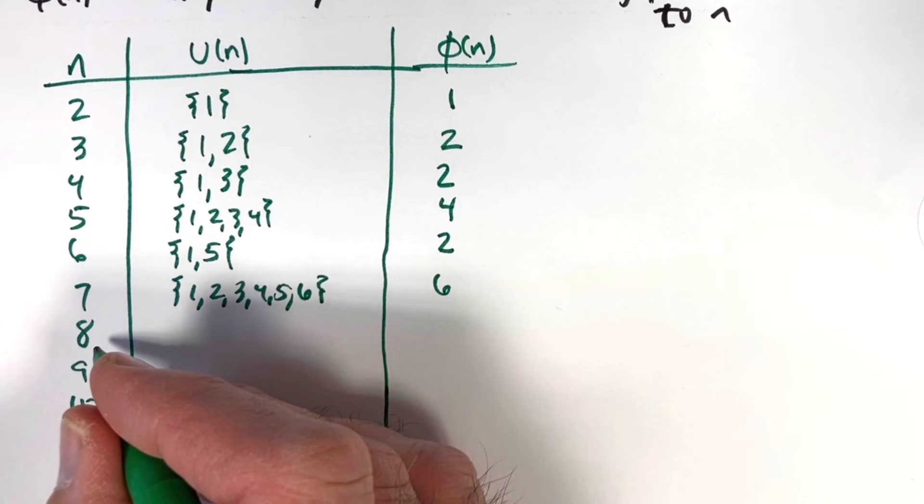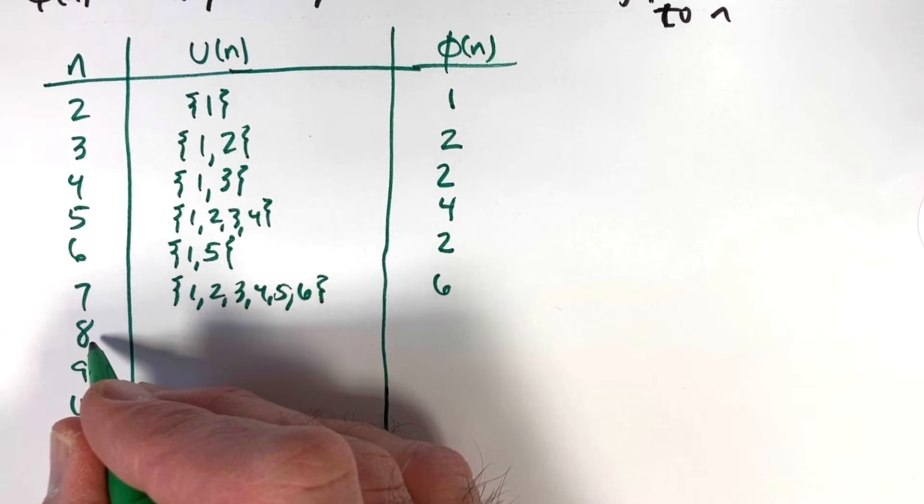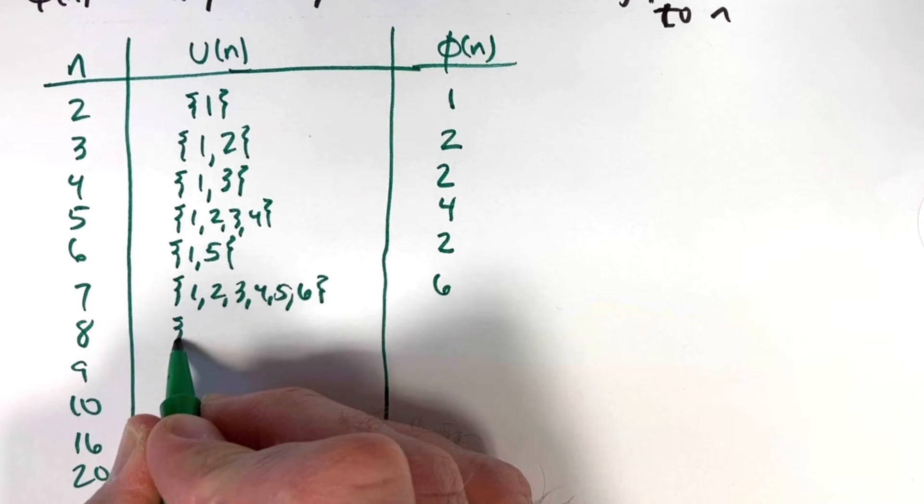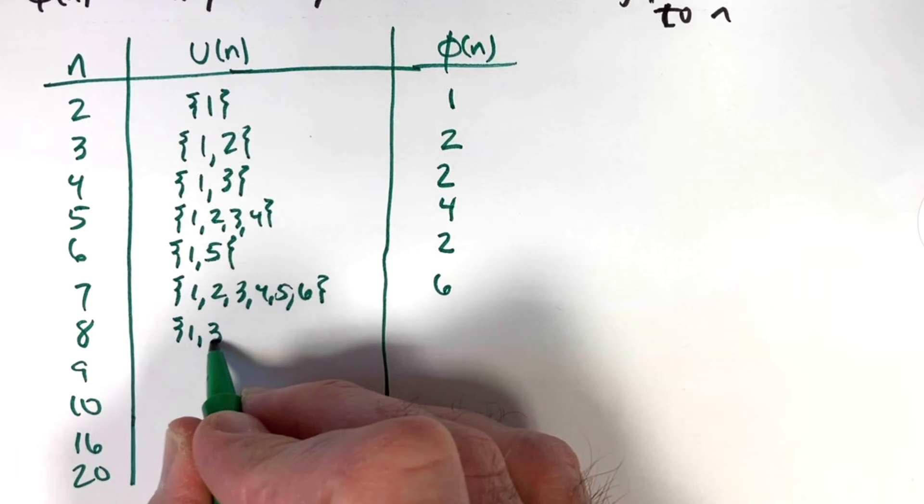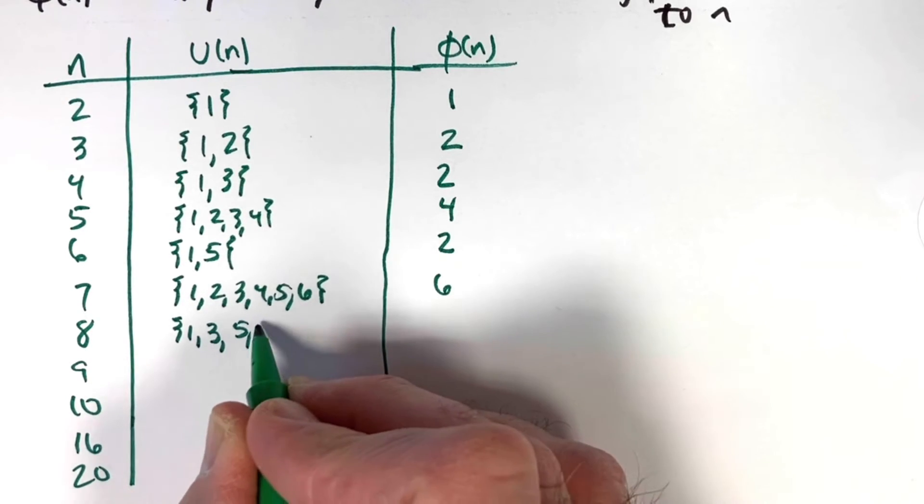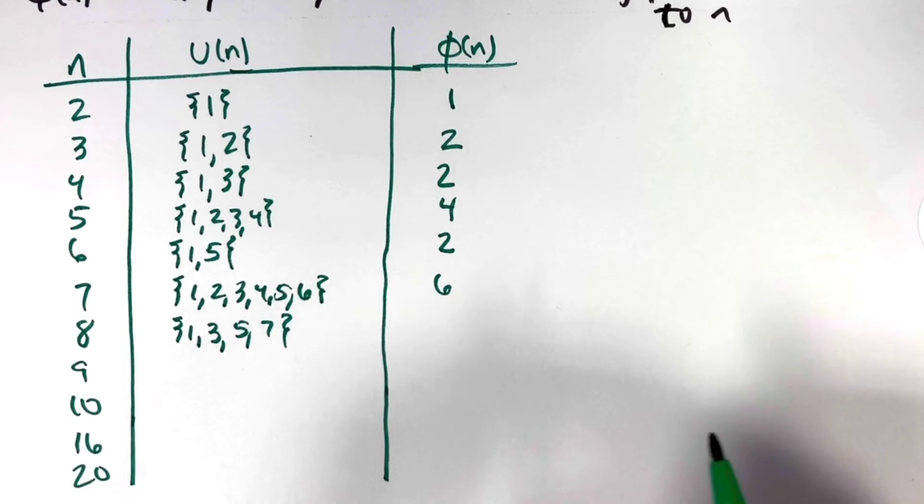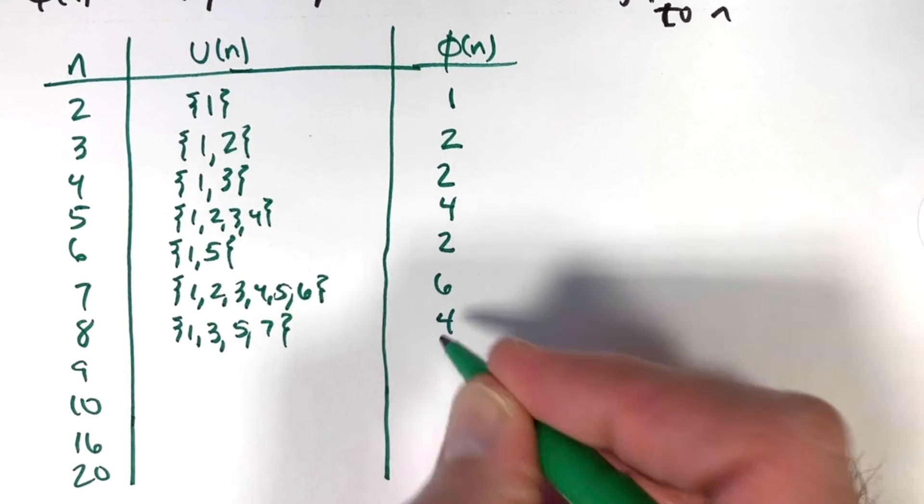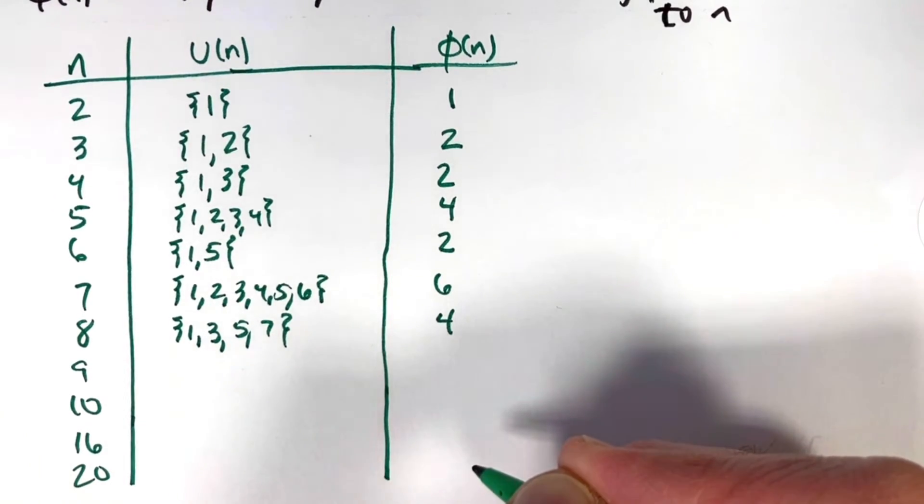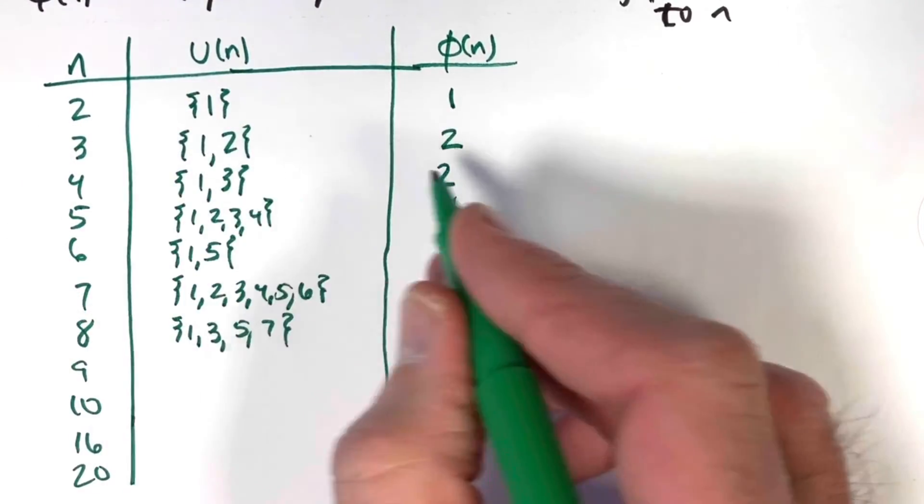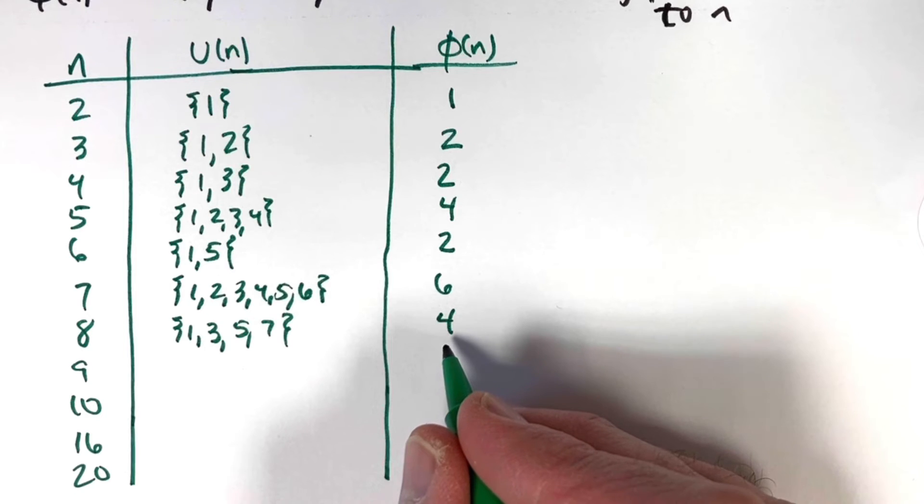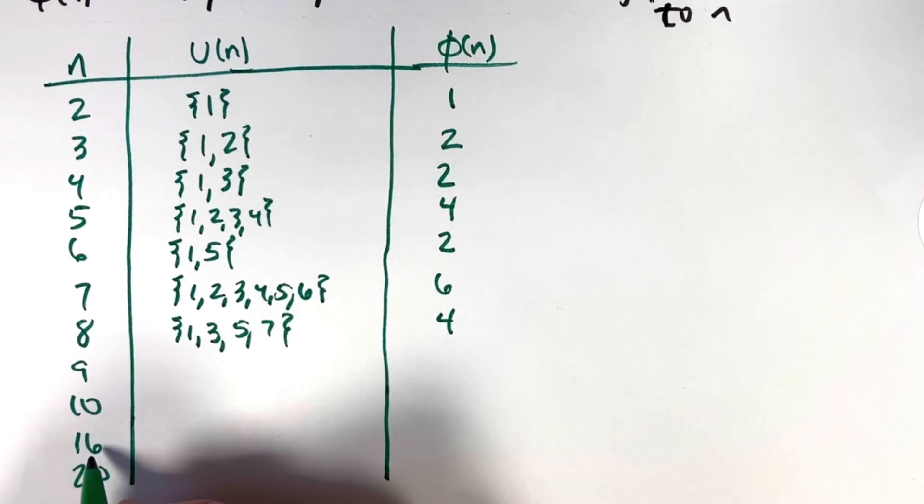When n = 8, which is 2³, the numbers we want in U(8) are the odd numbers less than 8: 1, 3, 5, and 7. How many are there? Four of them, so φ(8) = 4. Perhaps you see another pattern: φ(2) = 1, φ(4) = 2, φ(8) = 4. You might want to guess what φ(16) is.